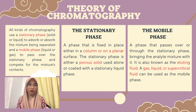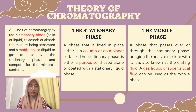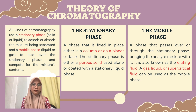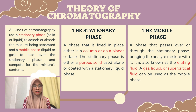In the theory of chromatography, all kinds of chromatography use a stationary phase, which is solid or liquid, to adsorb or absorb the mixture being separated, and a mobile phase, which is liquid or gas, to pass over the stationary phase and compete for the mixture's content. There are two phases: first, the stationary phase, and second, the mobile phase. The stationary phase is either a porous solid used alone or coated with a stationary liquid phase.